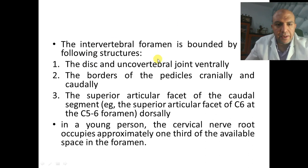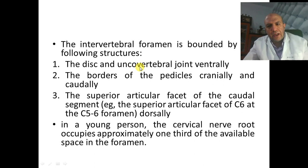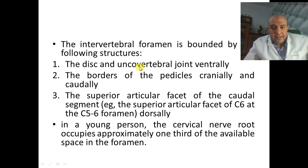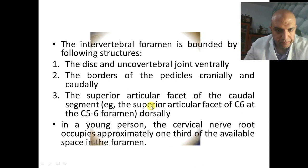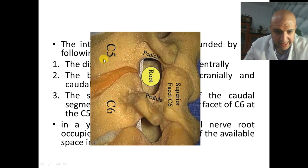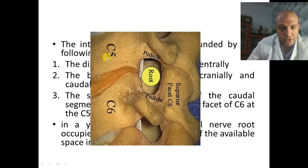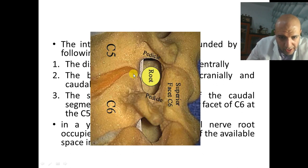This is the anatomy of the intervertebral foramen. Ventrally is the uncovertebral joint — the articulation between the uncinate process below and the recess above. The borders of the foramen are: the pedicle above and below, and the superior articular process. The root passes here. The uncovertebral joint is there anteriorly.